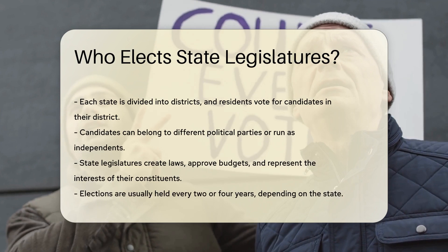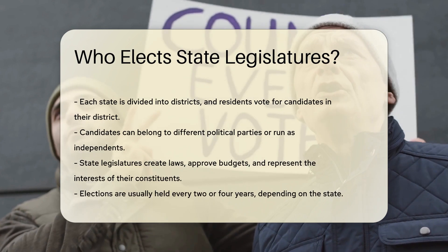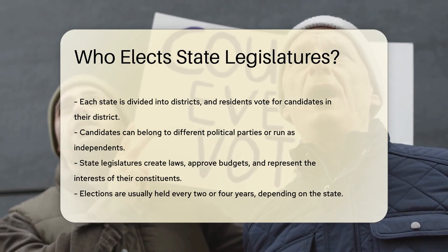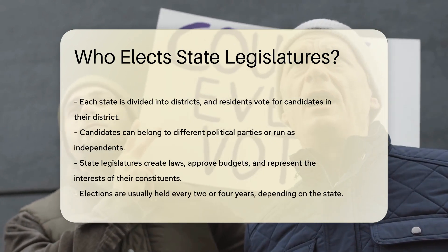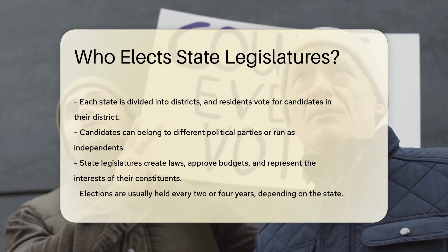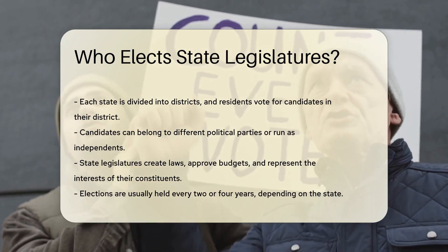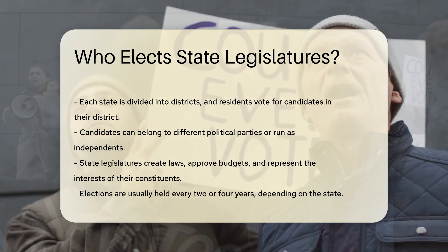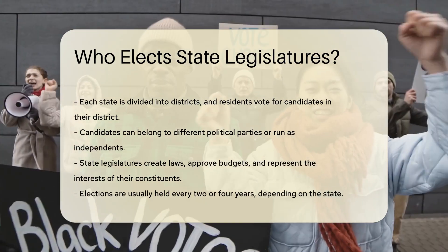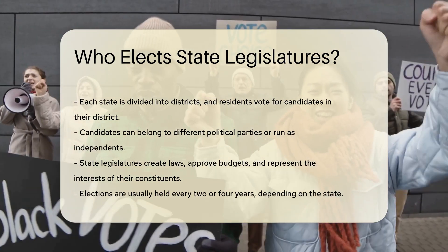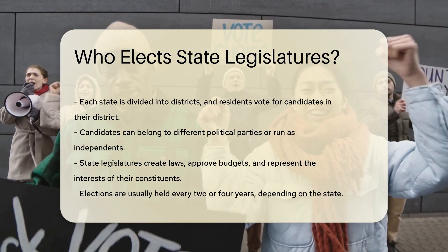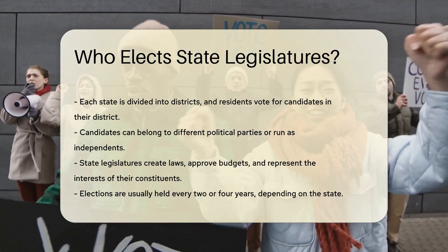Each state is divided into districts, and residents vote for candidates in their district. Candidates can belong to different political parties or run as independents. State legislatures create laws, approve budgets, and represent the interests of their constituents.